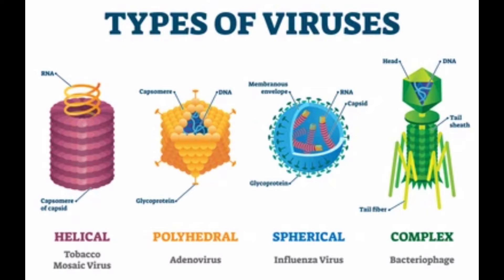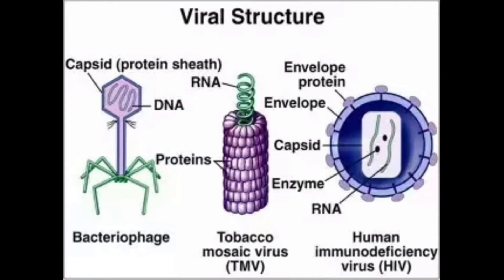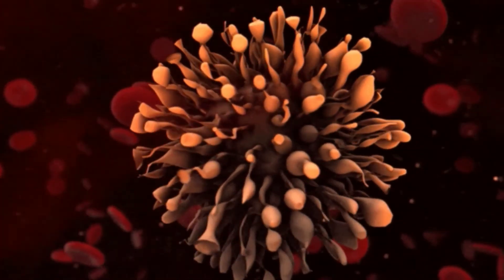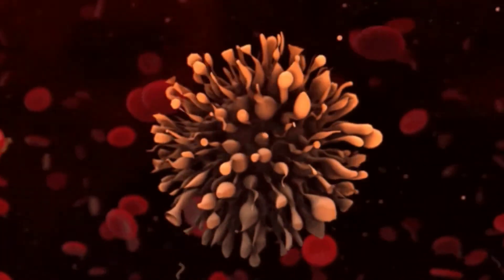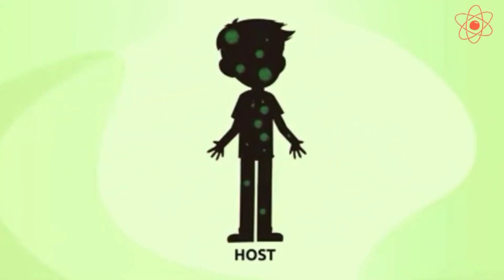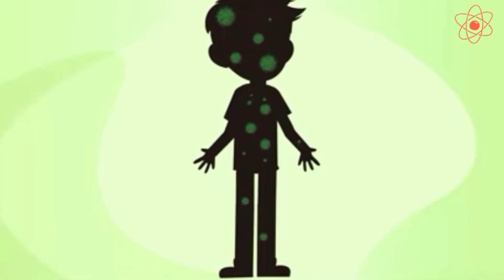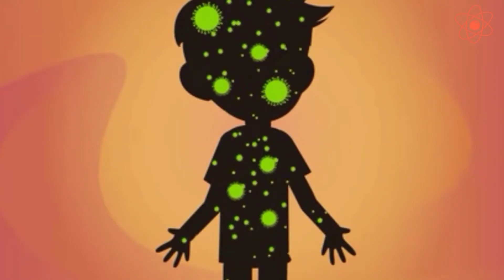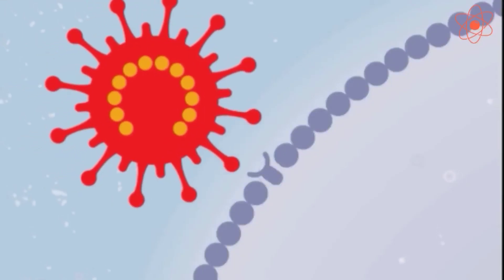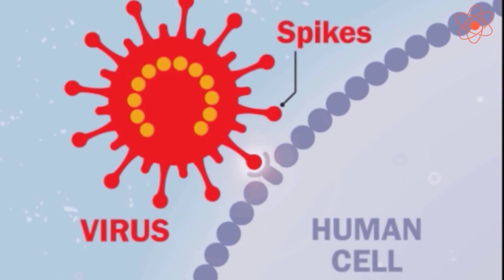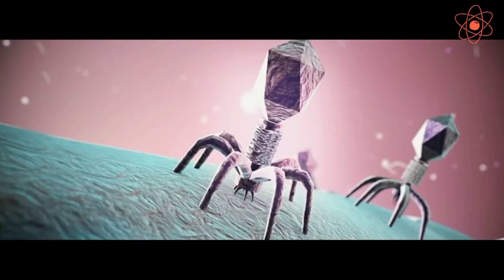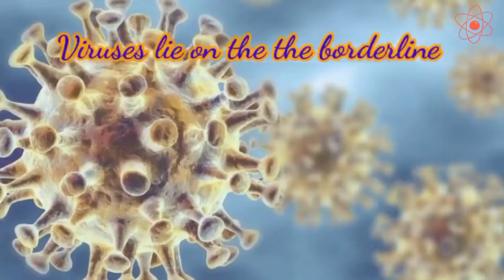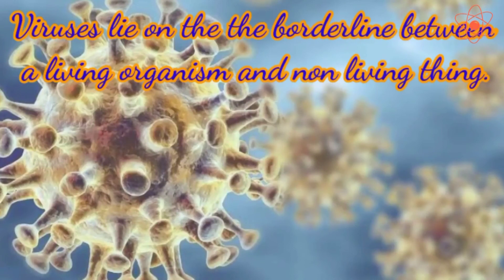They do not have any particular cell structure like other microorganisms. These microbes show characteristics of both living organisms and non-living things. A virus behaves like a living organism inside the body of other organisms, that is, the host. It reproduces and carries out other life processes inside the body of a host. But outside the body of a host, it behaves like a non-living thing, as it does not show any kind of activity. Therefore, most scientists believe that viruses lie on the borderline between a living organism and a non-living thing.